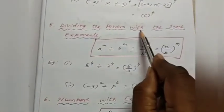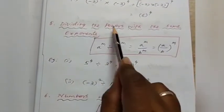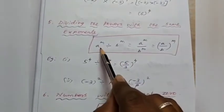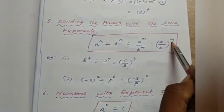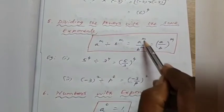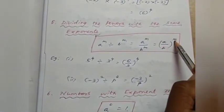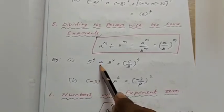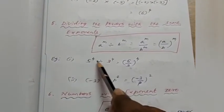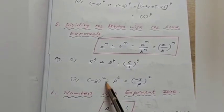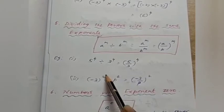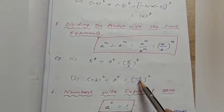The fifth law is dividing powers with the same exponents. The formula is: a power m divided by b power m equals a by b the whole power m. For example, 5 power 4 divided by 3 power 4 gives 5 by 3 whole to the power 4. Second example: minus 3 whole square divided by p power 2 — powers are the same, so the answer is minus 3 divided by p, whole power 2.